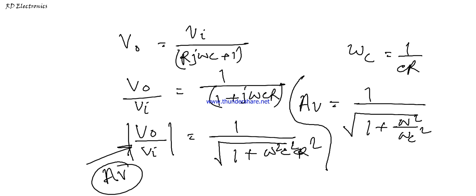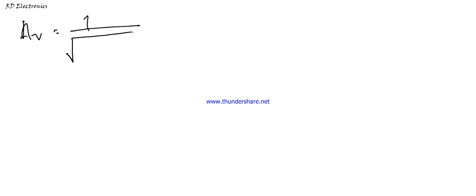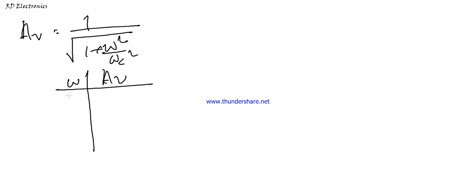From this equation we derive some key terms. The gain is: A_v = 1 / √(1 + ω²/ωC²). Now we make a chart. Consider first ω = ωC/2, then ω = ωC, then ω = 2ωC, then ω = 10ωC. When ω = ωC/2, substituting into the formula gives a value of √2/√3, which is √(2/3).